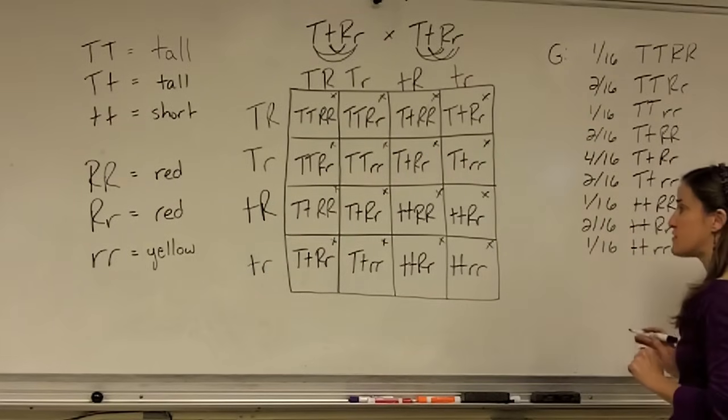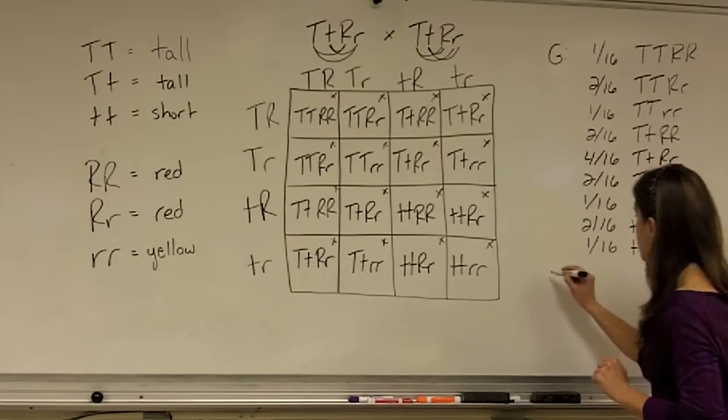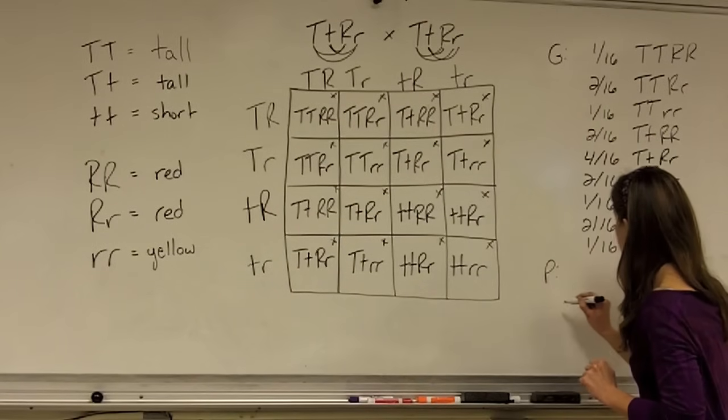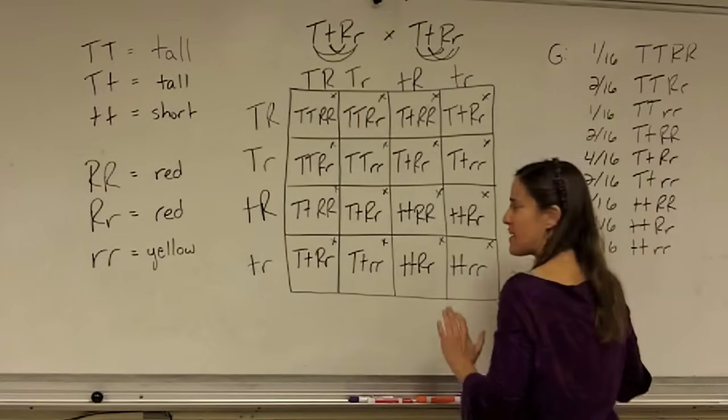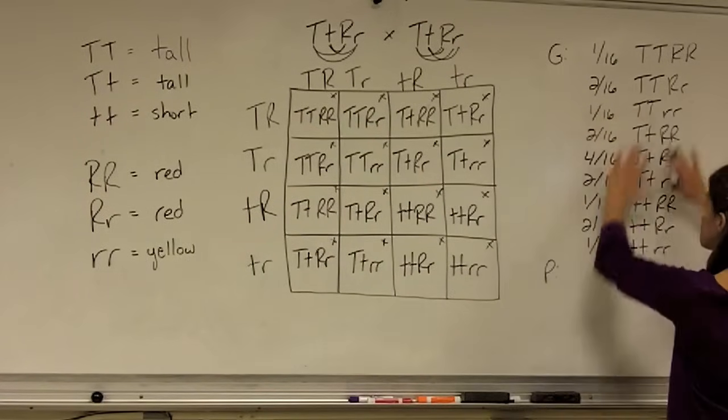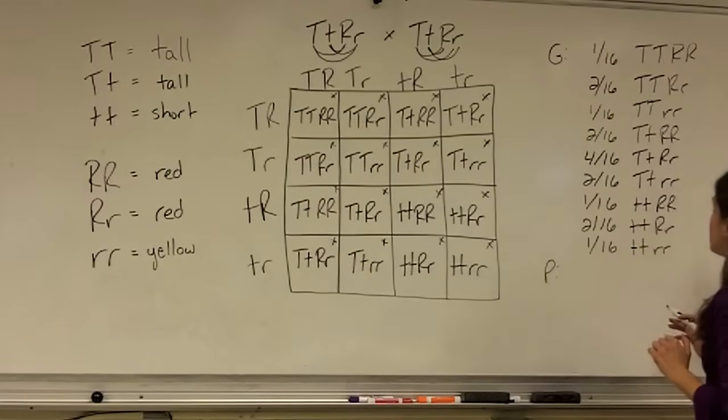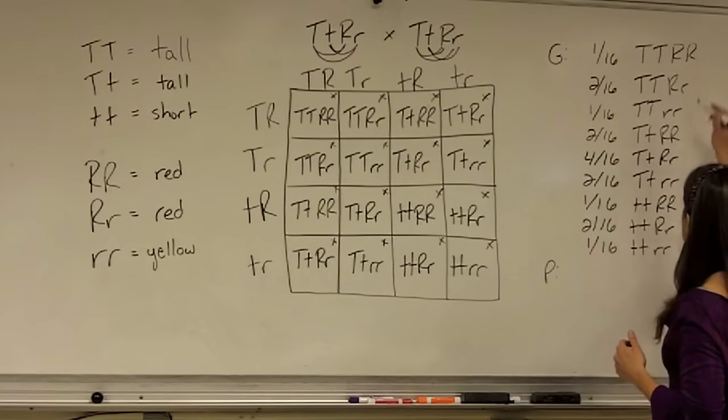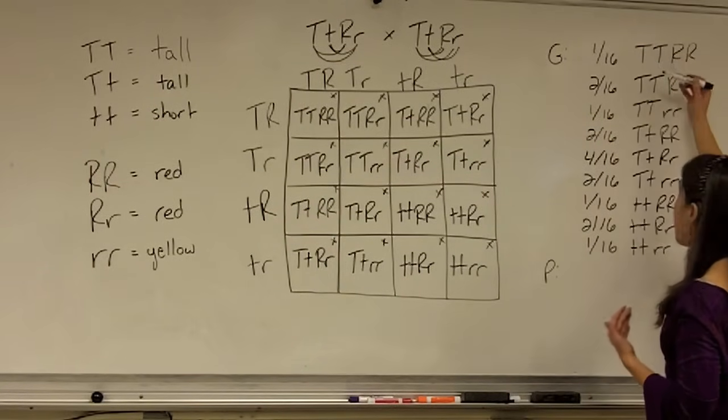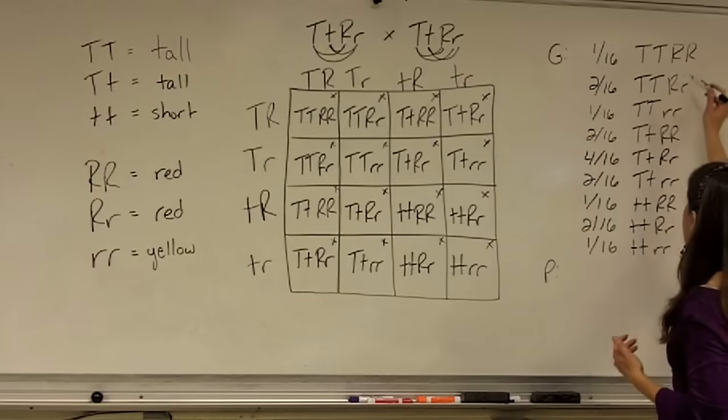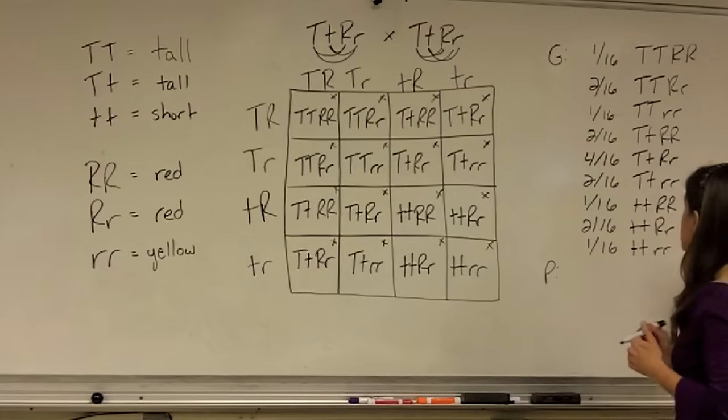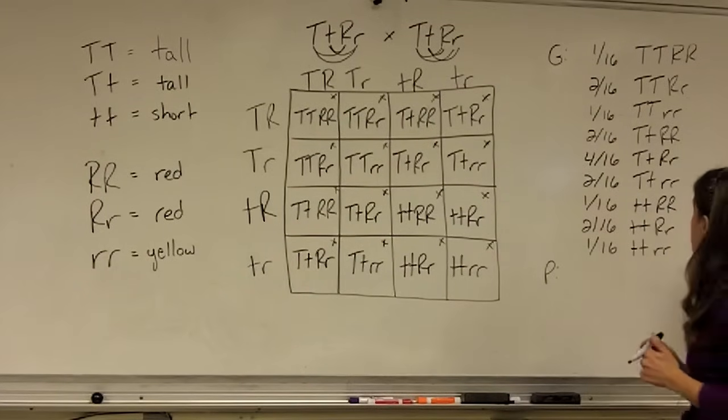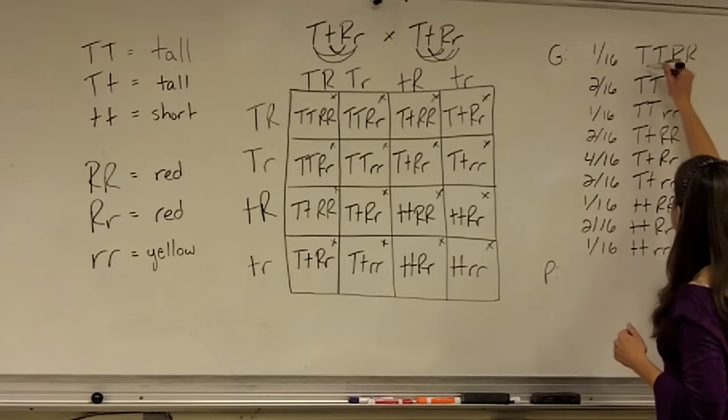So these are my proportions of genotypes. Last but not least, I'm going to figure out the proportions of phenotypes. The easiest way to do this is not to go back to the square. That gets a little complicated. So I like to work from the genotypes referring back to the key as needed. The easiest way to think about this is to remember about dominance and recessiveness. So if you have a big T at all, it's going to be tall. If you have a big R at all, it's going to be red. No big T, it'll be short. No big R, it'll be yellow.